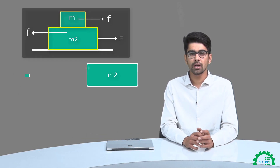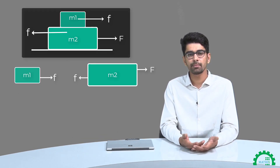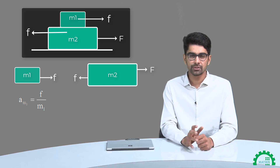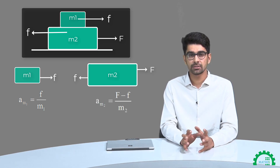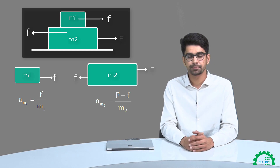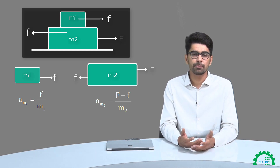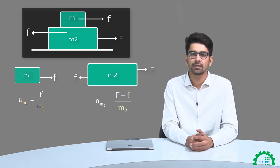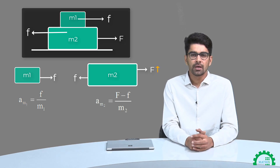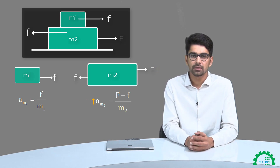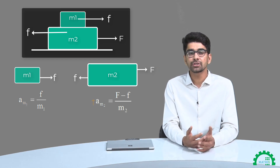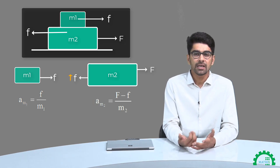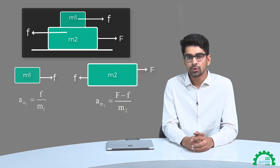So if we draw a free body diagram of both M1 and M2: on M1 we only have frictional force, whereas on M2 we have our applied force F and friction. So the acceleration of M1 will be only due to the frictional force, whereas M2's acceleration is the net effect of the applied force and friction. So if we increase the value of force — suppose we see what happens if we increase the value of force F from 0 to infinity — because of that, the acceleration of M2 will increase, and if the acceleration of M2 increases, frictional force will also increase its value and make the acceleration of M1 equal to M2, just to prevent slipping.